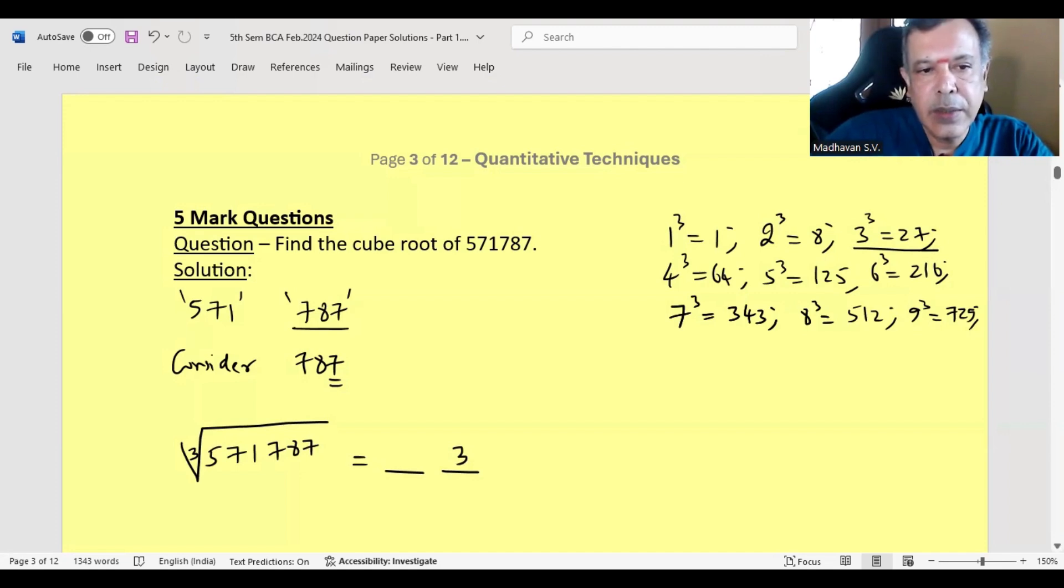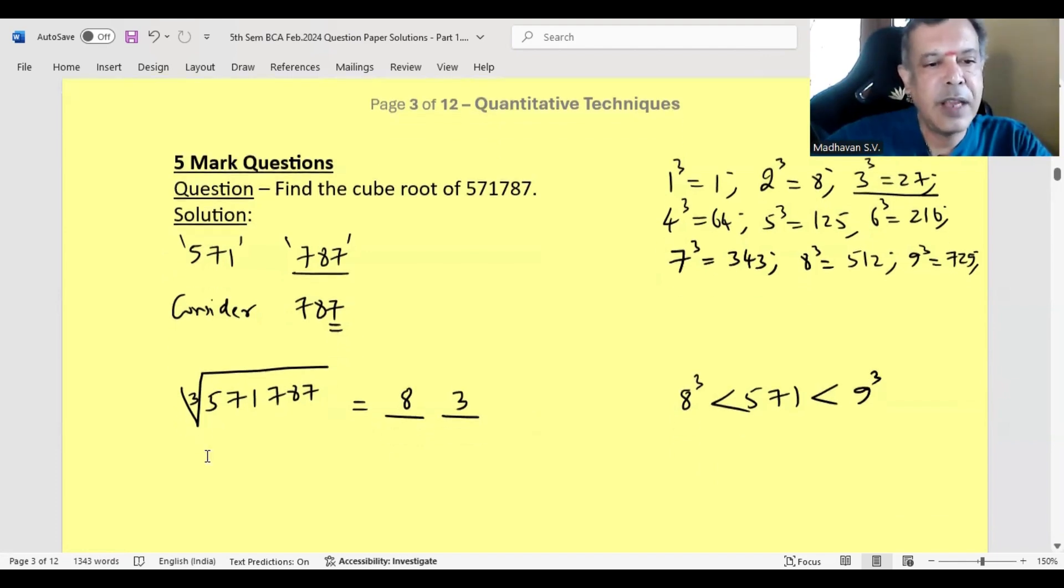Now consider the first triplet, which is 571. That lies between which cubes? It lies between 8 cube and 9 cube, because 8 cube is 512 and 9 cube is 729. So we will consider the first number, which is 8. So 83 cubed will be 571,787. That way we can find out cube roots. This is applicable if the number given is a perfect cube.